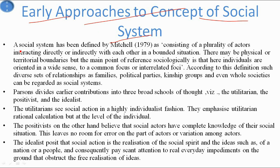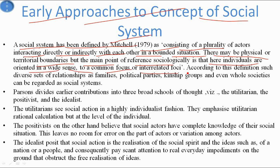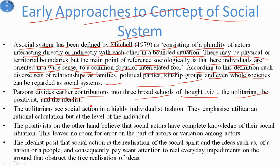There are early approaches to the concept of social system. A social system has been defined by Mitchell in 1979 as consisting of a plurality of actors interacting directly or indirectly with each other in a bounded situation. There may be physical or territorial boundaries, but the main point of reference sociologically is that individuals are oriented to a common focus or inter-related focus. Accordingly, diverse sets of relationships like families, political parties, kinship groups, and even whole societies can be regarded as social systems.